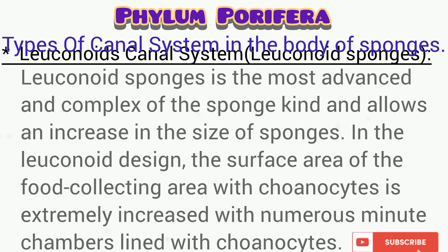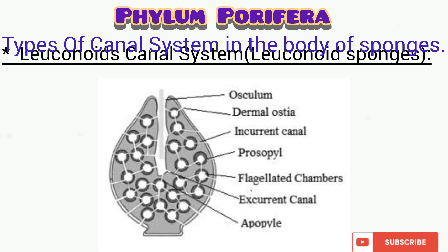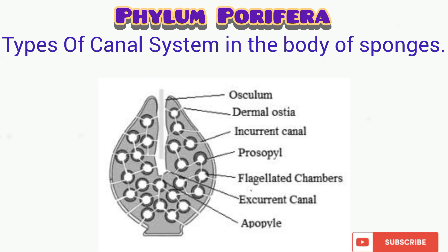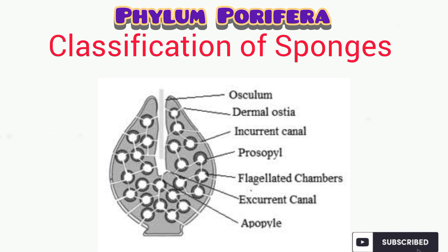The last type of canal system in the body of sponges is the leuconoid canal system, which is the most advanced and complex kind of canal system, as you can see in the diagram. This canal system increases the surface area of the body of these sponges, enabling them to absorb more nutrients and allowing these sponges to increase in size. The leuconoid sponges are actually bigger than the asconoid sponges. Take a look at the numerous chambers present in the body of the leuconoid sponges.